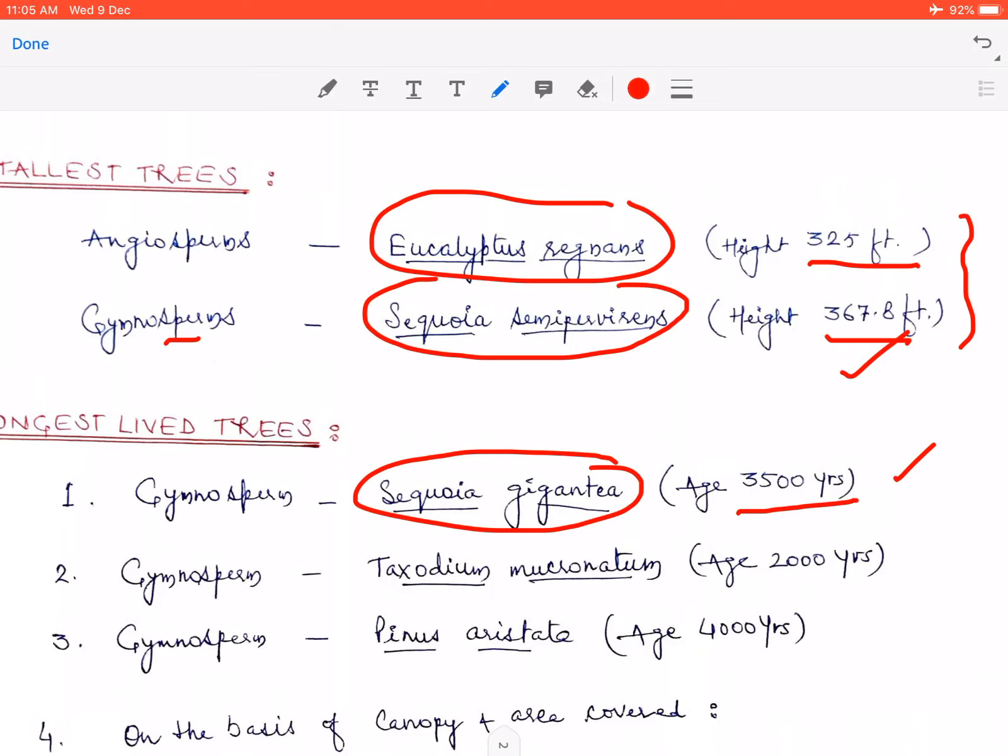Iske baad hum dusre ek aur gymnosperm ki baat karte hain jo hai Taxodium mucronatum. Iski age karib 2000 years ke karib mani gayi hai, aur iska jo circumference hai stem ka, it is around 125 feet. Aur ye Mexico ke Oaxaca mein ugha hua hai.